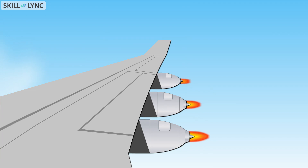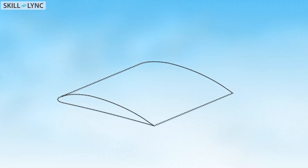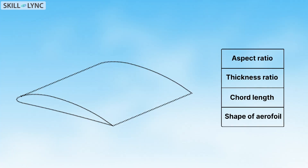This is a basic outline of what happens in the industry as well. Let us say that you are tasked with creating a new airfoil design. To design an airfoil computationally you will need various parameters like aspect ratio, thickness ratio, chord length, shape, etc.